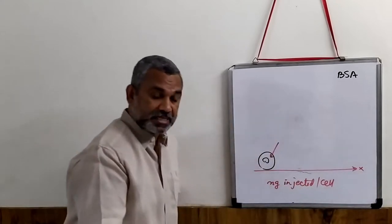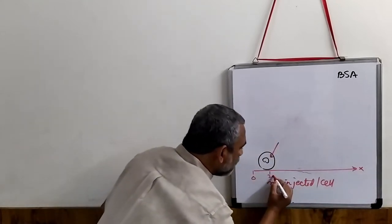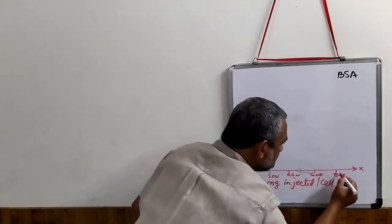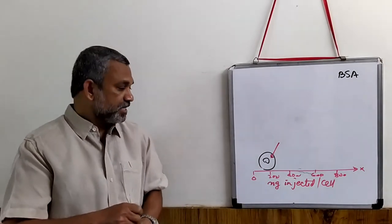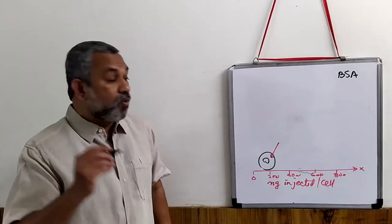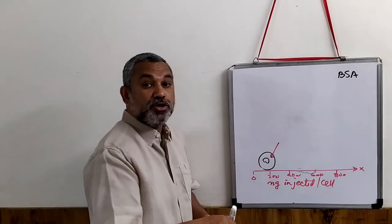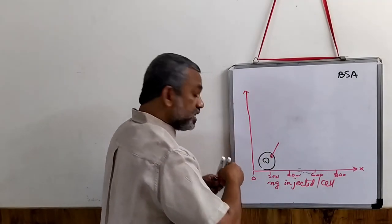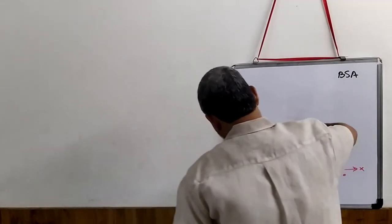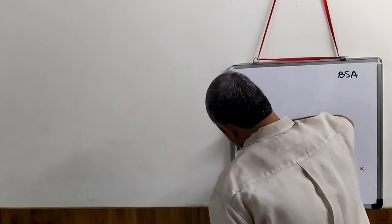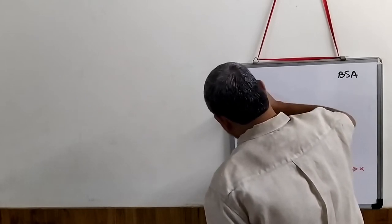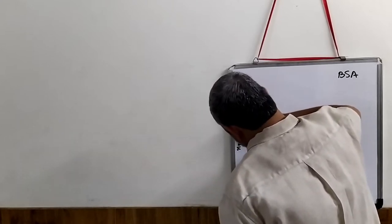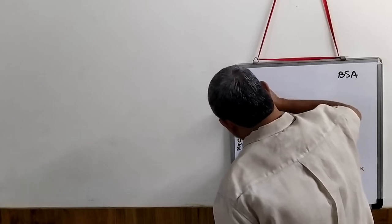So the x-axis goes from 0, 200, 400, 600, 800, and so on — nanograms of BSA injected per cell. And on the y-axis we take nuclear accumulation. This is the y-axis representing nuclear accumulation.